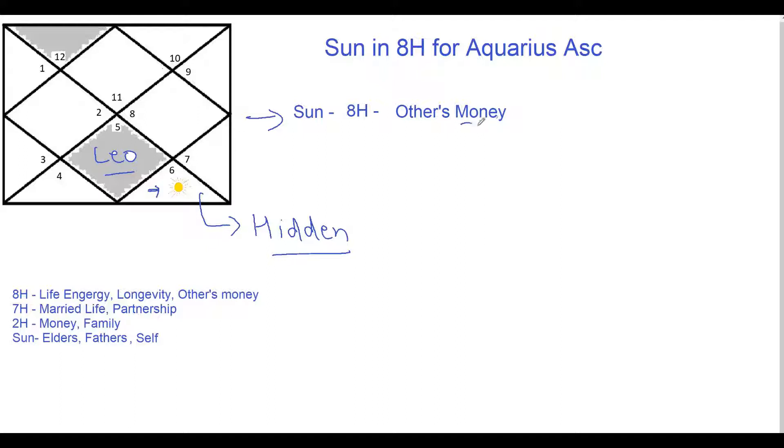Now this placement of Sun in this eighth house also has a significant say on money related matters or financial wisdom of a person. Because eighth house shows others money and there is a direct aspect of this on the second house which shows your accumulated wealth. So now Sun being your soul or your core of your being, what this placement indicates generally is that these kind of people are always very interested in others money or in doing business or things or new enterprises which involves others money. They might start up businesses which include taking money from others and applying it or investing it and earning interest on top of it.